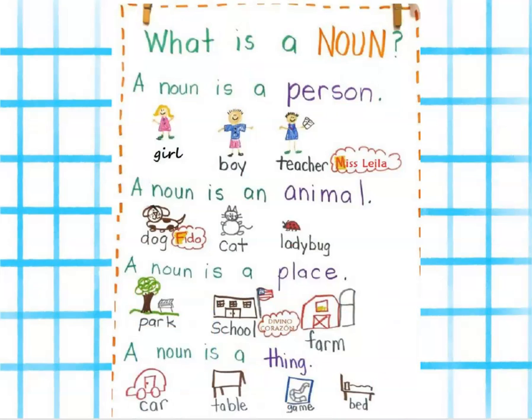What is a noun? A noun is a person — a girl, a boy, a teacher, you, or me. A noun is also an animal — a dog, a cat, a ladybug.